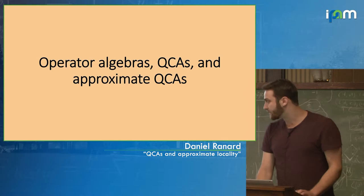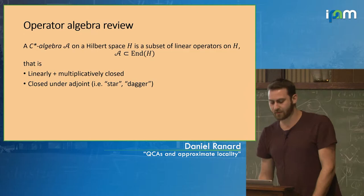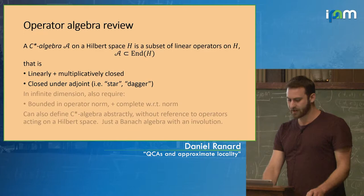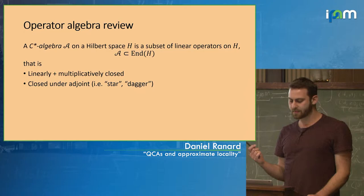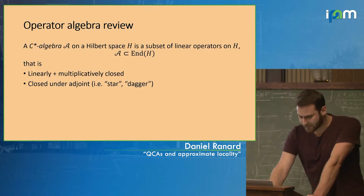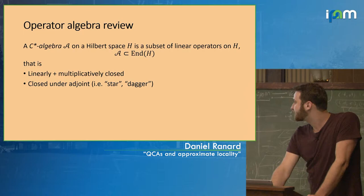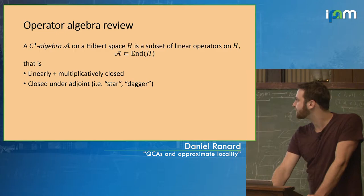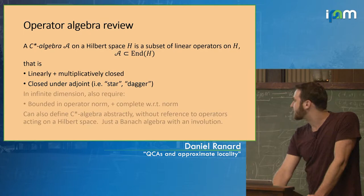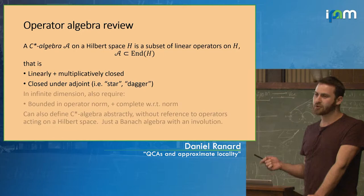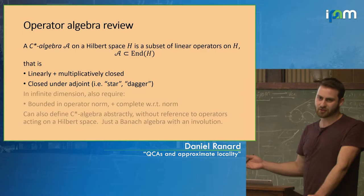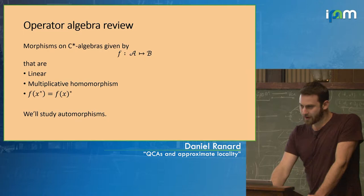Now I'll talk a tiny bit about operator algebras and QCAs and define approximate QCAs. A C*-algebra is just a subset of linear operators on a Hilbert space — it's an algebra, also closed under the Hermitian adjoint. There's also an abstract definition that doesn't require it to be represented on a Hilbert space. When you work with these abstract algebras, you don't need to think about the fact that the operators are acting on a vector space, which is sometimes nice from a practical point of view.